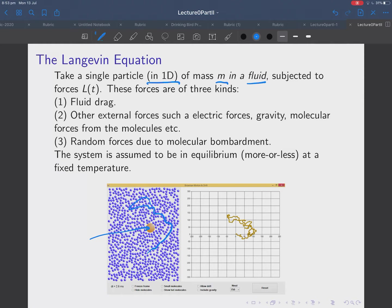And, it's subjected to three kinds of forces. The first one is fluid drag. And, we'll go through these one after another in more detail. So, if you drag this through a fluid, you get some resistance. It might also be subjected to electric forces. If it's charged, gravity. If it has mass. It's definitely got mass. Molecular forces from molecules. So, Lennard-Jones, dispersion forces, van der Waals forces, that kind of stuff.